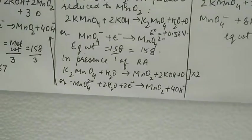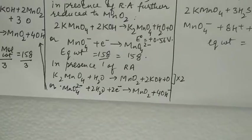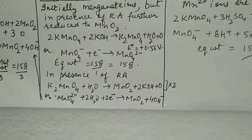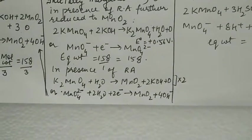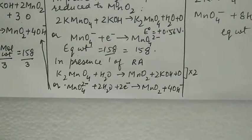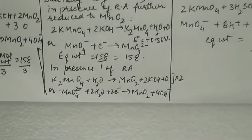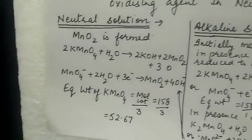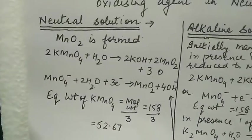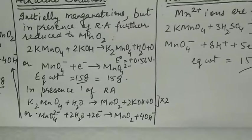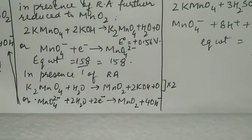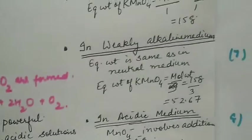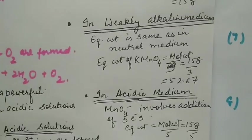But if the alkaline medium is weak, the manganate ions that form take two more electrons and convert to manganese dioxide. Then the reaction becomes the same as in neutral solution. In that case, the equivalent weight will be molecular weight divided by three.